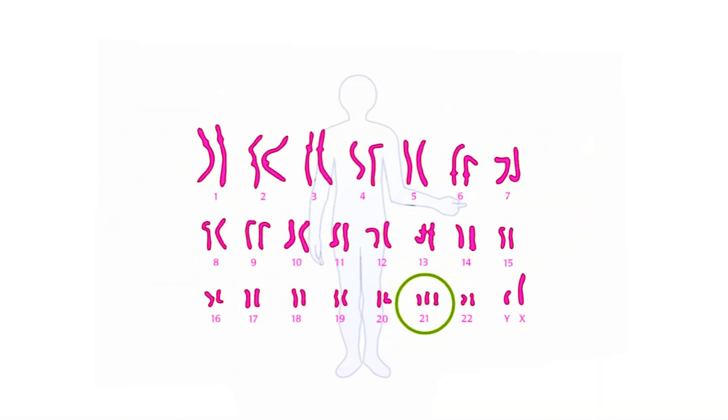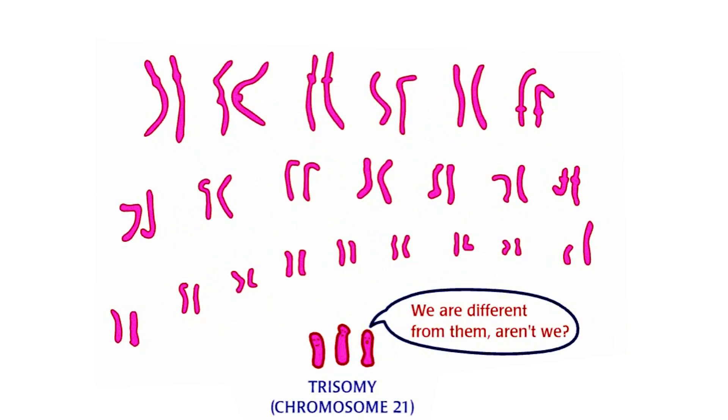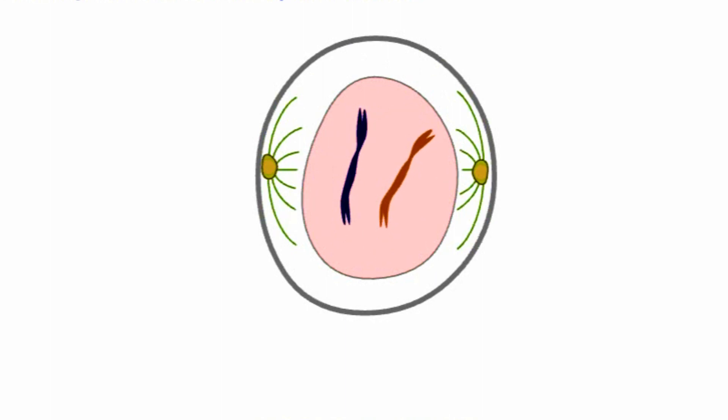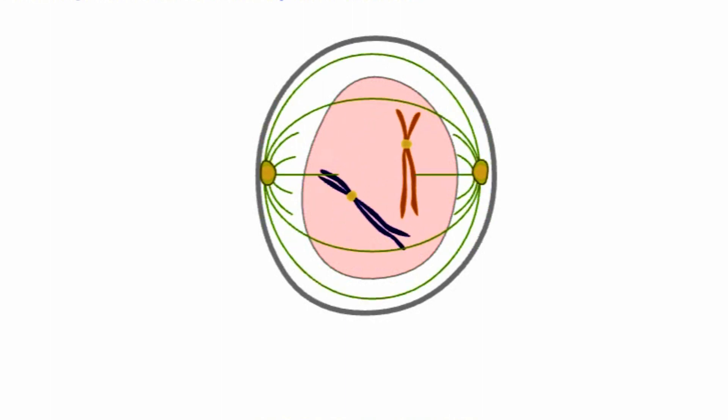Non-disjunction Down syndrome is the most common and individuals with this form have an extra chromosome in all their cells. Non-disjunction is a result of faulty chromosome separation during cell division in egg or sperm cell production. This type of cell division is called meiosis.